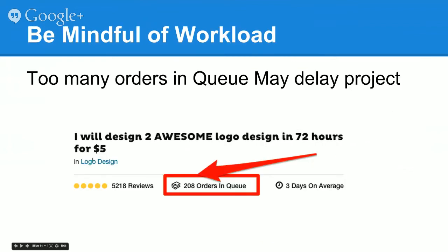Once you choose a designer with high ratings, before you pick them, look at how many orders they have in queue. This particular person has 208 orders in queue — they say they'll design two awesome logos in less than three days, but with 208 orders that's about 70 orders a day they have to finish. So be careful and make sure you know how many orders they have in queue if you're in a hurry.